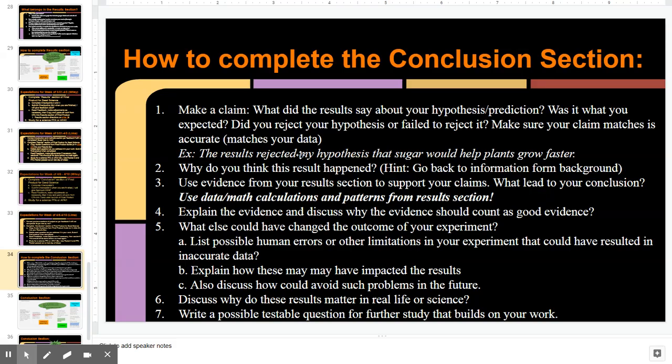After I do that, I move on to trying to explain why I think the results happened the way they did. The secret here is if you match your expectation, you just go back to your rationale, borrow from there, and reuse that here to explain. So basically, if you had a good reasoning on your rationale, it should explain why it is that the results happened the way they did.